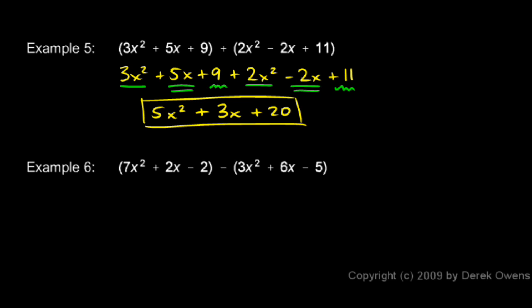In example 6, we have two polynomials, and we're subtracting: 7x² + 2x - 2 minus 3x² + 6x - 5.